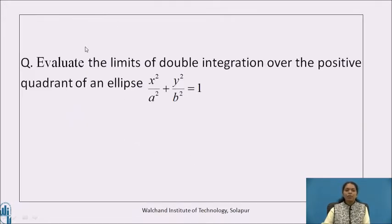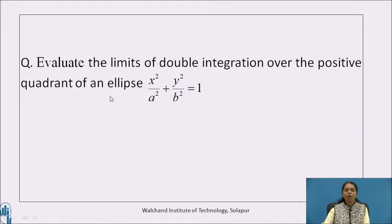Friends, before we proceed further, pause your video for a minute and answer this simple question: Evaluate the limits of double integration over the positive quadrant of an ellipse x²/a² + y²/b² = 1.